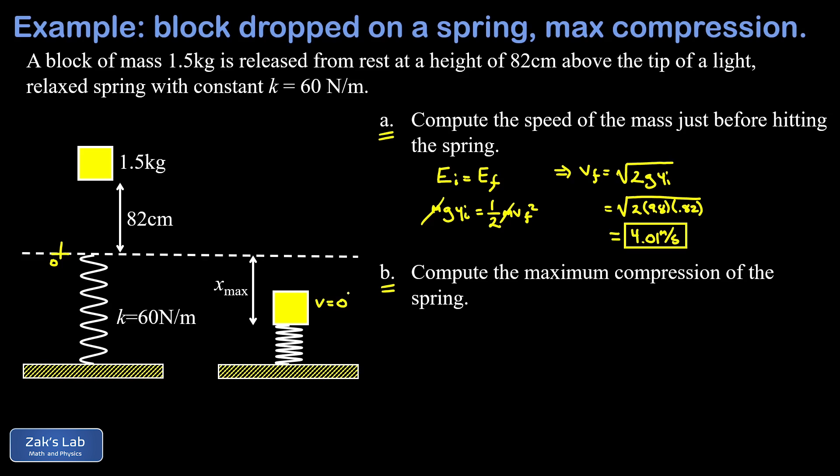And there's basically two different roads we could take, and either way we do this we're going to end up with the same equation to solve. We could use the result of part a and take the speed right at the tip of the spring and then do an energy conservation analysis, or we could just go all the way back to the beginning and use the stationary block at a height of 82 centimeters above the tip of the relaxed spring as our initial state. I would prefer to take that approach of just going back all the way to the beginning, mainly just because we can avoid repeatedly rounding our answers.